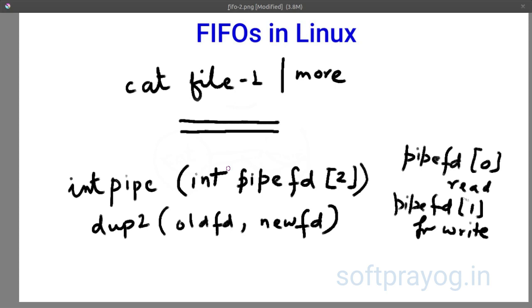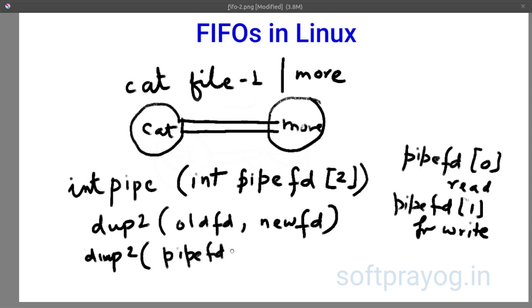Now first you create a pipe and get these two pipe file descriptors and then you create process. This is say process1 cat and this is say more. Now for the cat process you do a dup2 on pipefd1 and 1. 1 is the standard output and pipefd1 is the write pipe file descriptor.